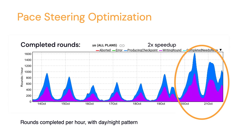The optimization of the pace steering algorithm is quite important. This plot shows the number of rounds completed per hour over a few days. It goes up and down — that's the day-night pattern, since we perform federated learning only when the device is not being used, and the likelihood of the device being idle is higher at night. Around October 19th–20th, we made improvements to the algorithm, and all of a sudden we had twice as many rounds completing per hour. So the optimization of that algorithm is really crucial to get the most out of the training population.